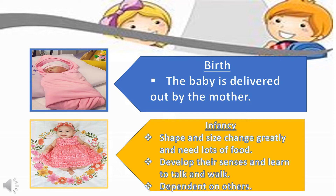Let us now discuss the different stages in the life cycle of humans. The first one, as you can see in the picture, is birth — the baby is delivered out by the mother.